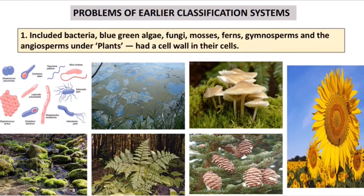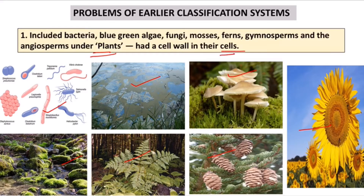The main problem of the earlier classification system was that they included bacteria, blue-green algae, fungi, mosses, ferns, gymnosperms, and angiosperms all in one group — that is, the plant kingdom. Why? The main reason was that all these organisms have a cell wall. So scientists thought that whatever organism has a cell wall will be included in plants.